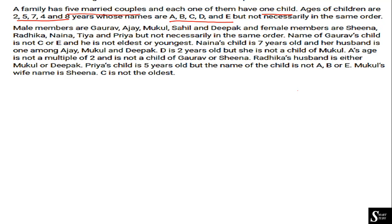We have to find out which children belong to which parents and their ages. Male members are Gaurav, Ajay, Mukul, Sahil, and Deepak. Female members are Sheena, Radhika, Naina, Tia, and Priya — but not necessarily in the same order. The males are husbands and females are wives. I am going to keep the names of the children as the basis for solving this.